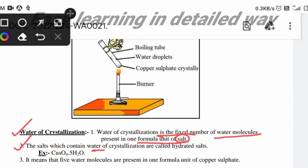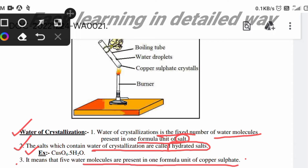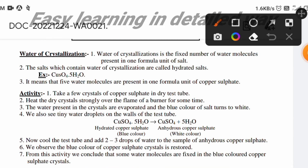The salts which contain water of crystallization are called hydrated salts. For example, copper sulfate with five water molecules — CuSO4·5H2O — has a fixed number of water molecules. This means that five water molecules are present in one formula unit of copper sulfate.